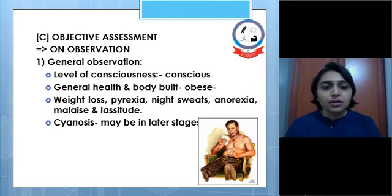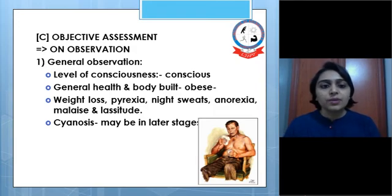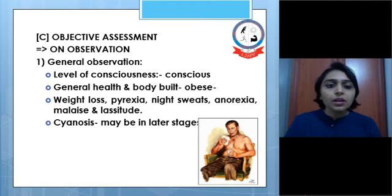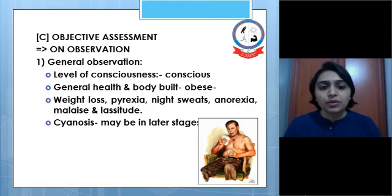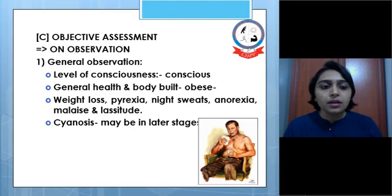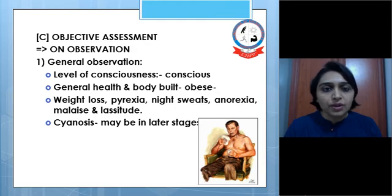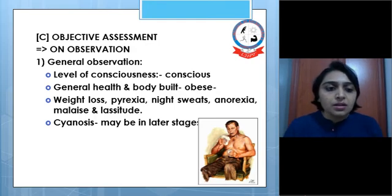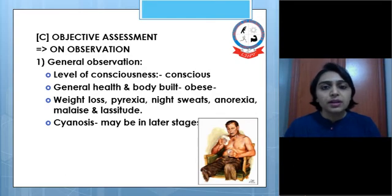On observation during objective assessment, the level of consciousness — the patient is usually conscious. Regarding general health and body build, these patients are typically of the blue bloater kind. Weight loss, pyrexia, night sweats, anorexia, malaise, and lethargy are features which may be found in bronchiectasis. Sinuses may be present in later stages.